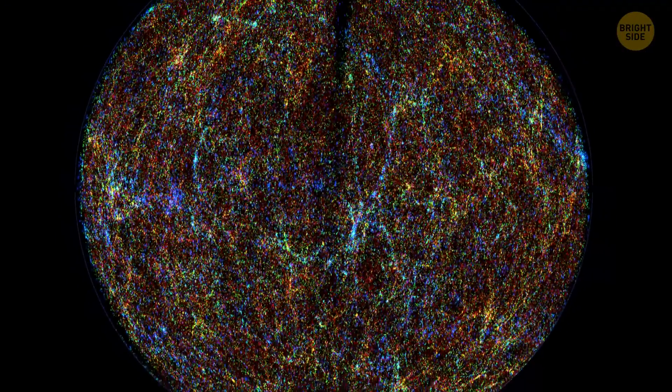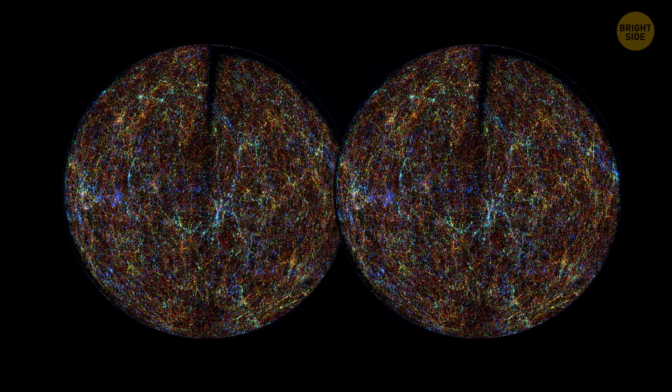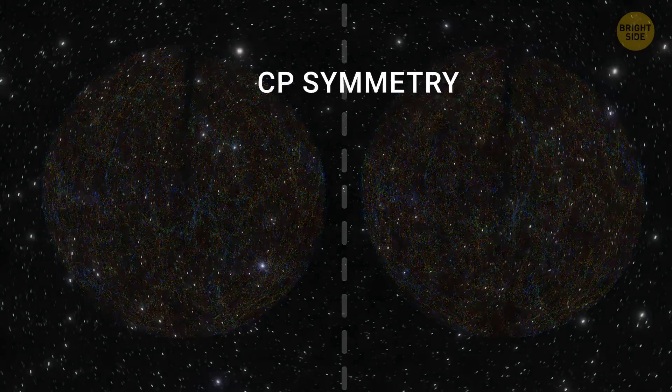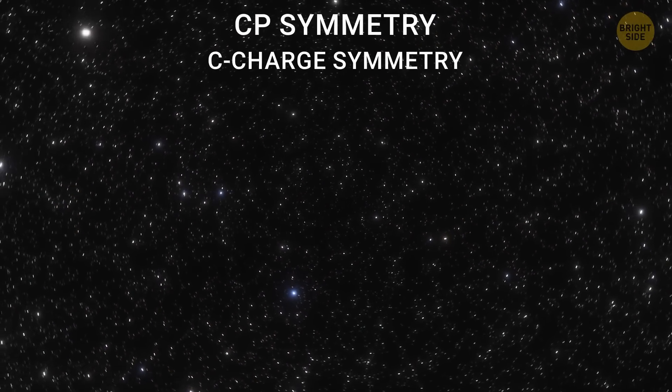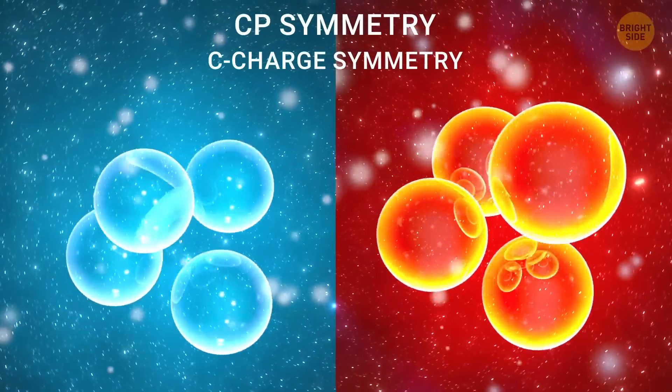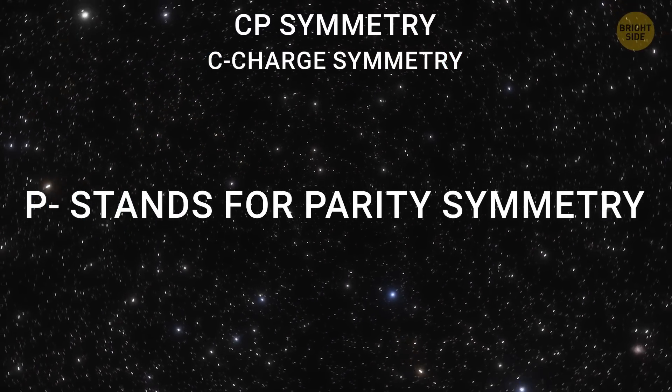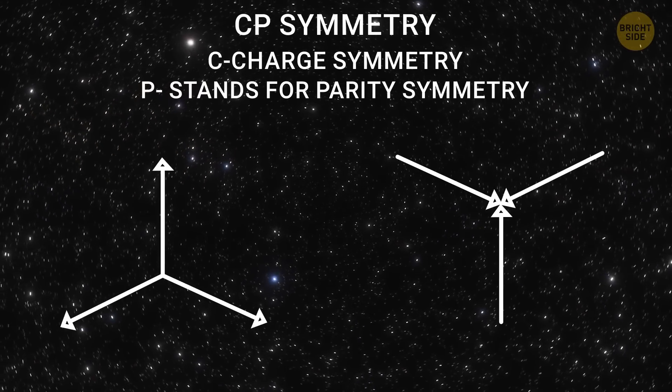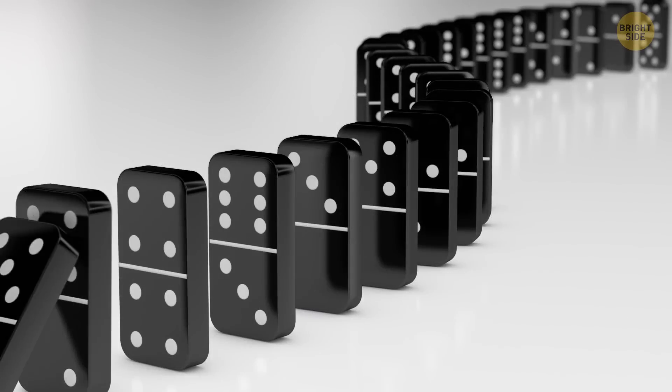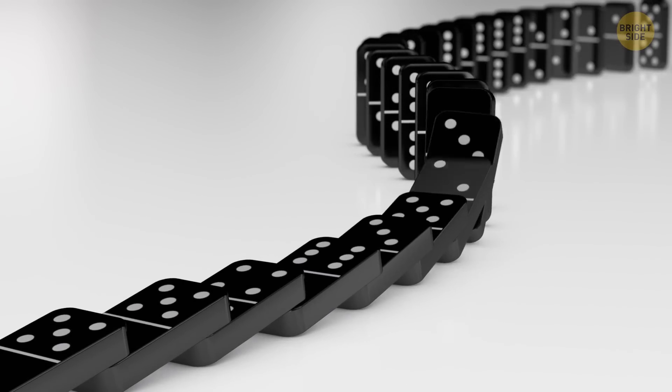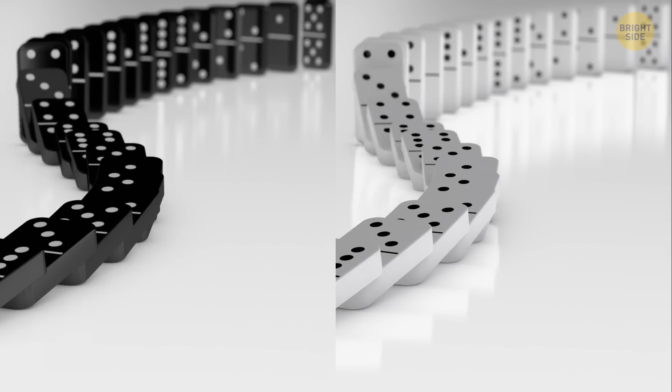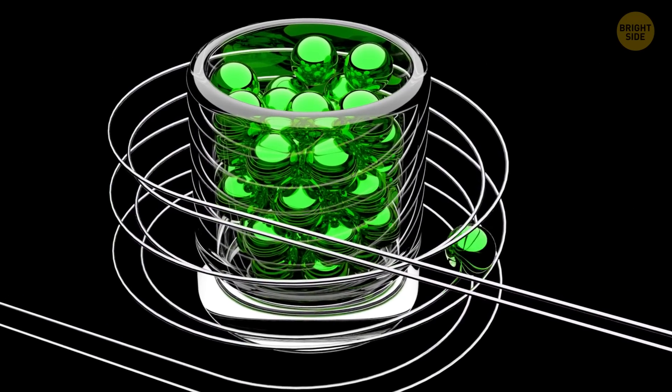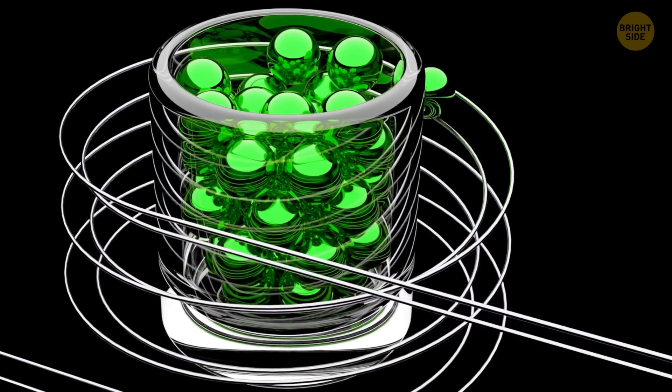Initially, scientists believe that this universe could be identical to ours in everything. All due to a property that used to be known as CP symmetry. The C stands for charged symmetry, and means that each elementary particle has a twin with an opposite charge. The P stands for parity symmetry, meaning the symmetry of space. That is, all three directions in our world have opposite directions in the alternate universe. This basically means that laws of physics are the same no matter what the location is and what type of particle is being considered. So, if you were to run the laws of physics in reverse, or in a different location, or with different particles, the results should be the same.